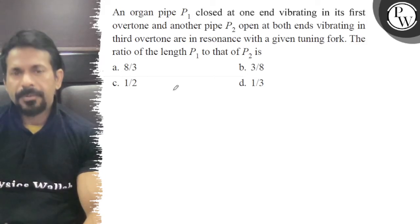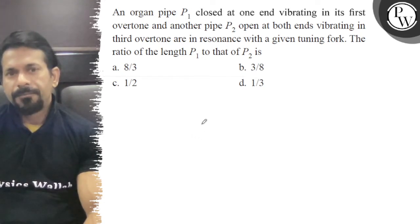Hello, let's see the question. An organ pipe P1 closed at one end vibrating in its first overtone. Another pipe P2 open at both ends vibrating in third overtone are in resonance with a given tuning fork. The ratio of the length of P1 to P2.